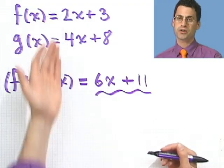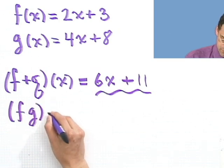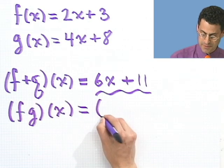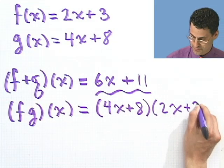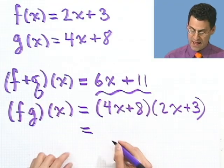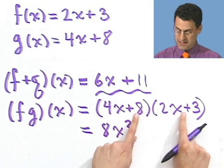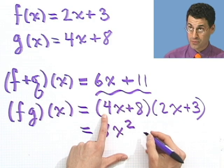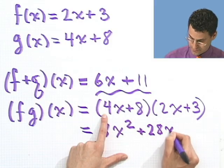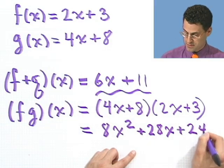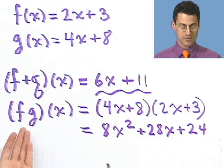You can imagine a similar kind of thing with subtraction, where you subtract the functions. Multiplying them, sometimes people write it this way: F times g of x. And it just means the product of those two things, which is 4x plus 8 times 2x plus 3. And you can then actually foil that out if you wanted to. This would be 8x squared plus 28x and the last times the last is 24. So here's a new function I built by taking these two other functions and combining them using multiplication.